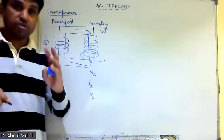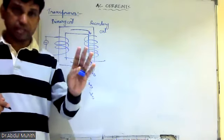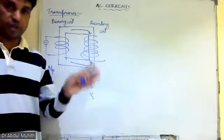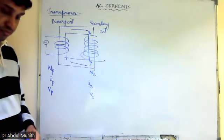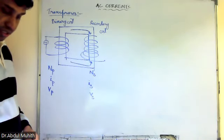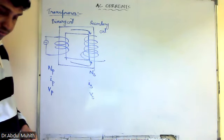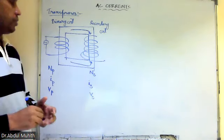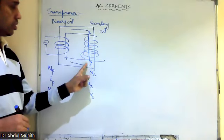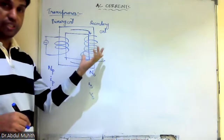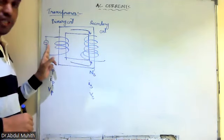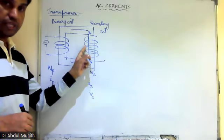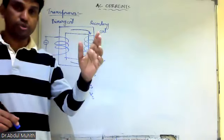A constant magnetic field cannot induce current — as per Faraday's law of electromagnetic induction, only a changing magnetic field can. So: changing current produces changing magnetic field, the changing magnetic field induces a changing current in the secondary coil. When that secondary current changes, it again produces a changing magnetic field that comes back — this is known as back EMF or self-induction, studied in the previous chapter.